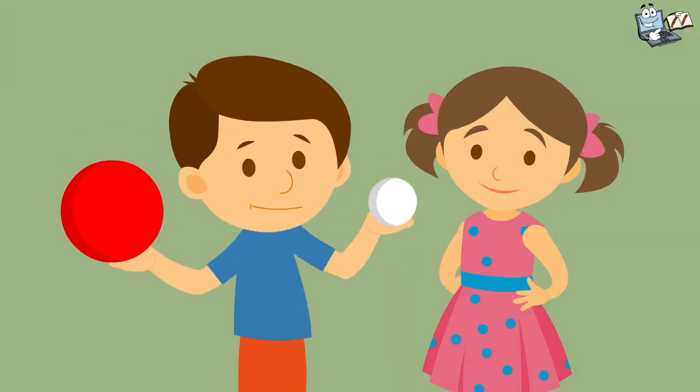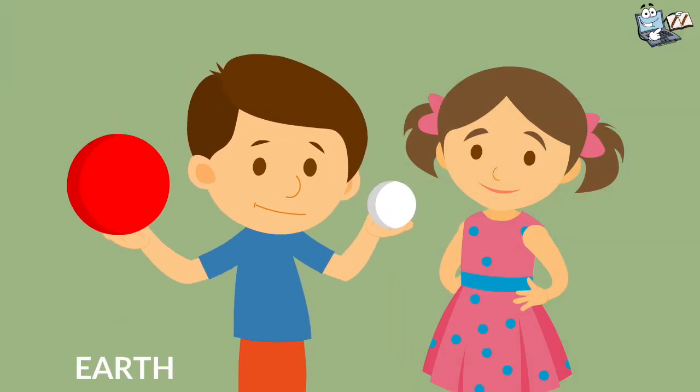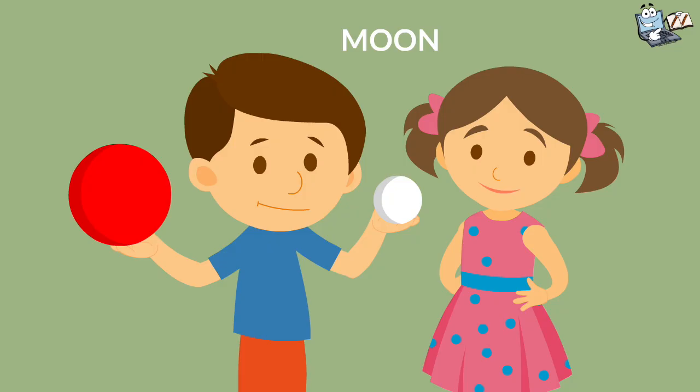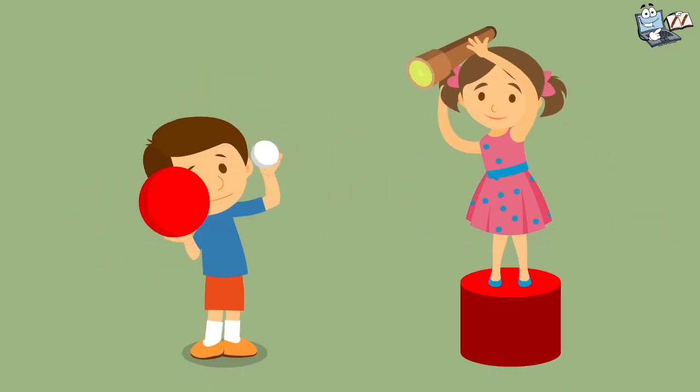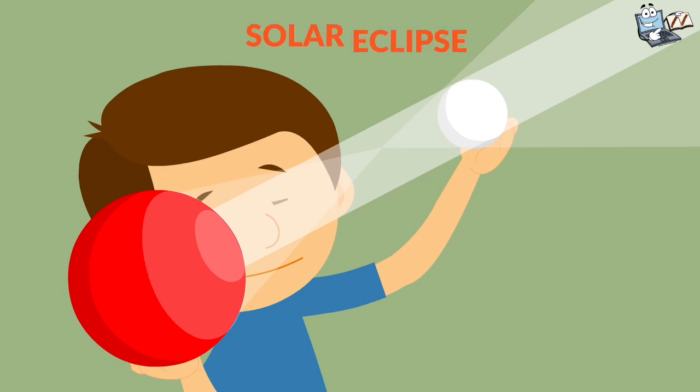Take two balls. Let's consider the bigger one as our Earth and the smaller one as moon. Now hold the balls like this. Now light up the torch. Consider the torch as sun. Here is the solar eclipse.